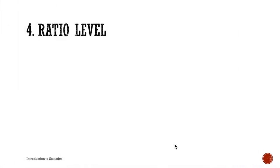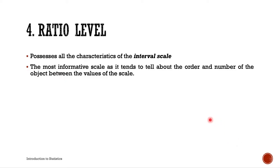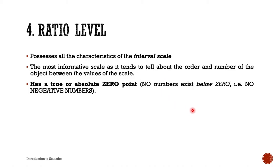The last level of measurement is the ratio level. The ratio level possesses all the characteristics of the interval scale — it has rank order, knows the difference between one value and another, represents quantity, and has equality of units. It is the most informative scale, telling us about order and the number of objects between values.